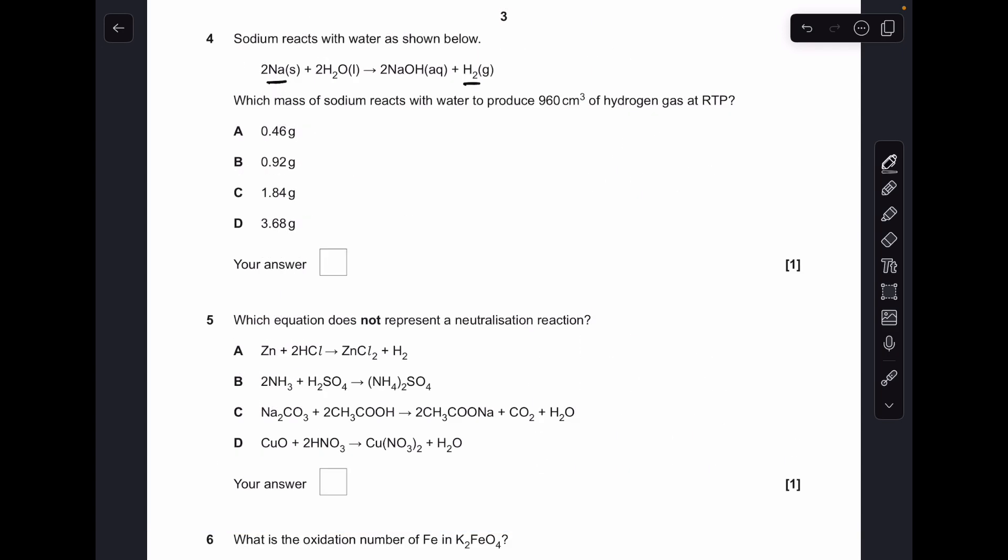Number 4, we've got to calculate the moles of hydrogen produced first of all, so 960 cm³ over 24,000 gets us 0.04 moles. Look at the ratio, so for every mole of hydrogen made, we need 2 moles of sodium, so the moles of sodium needed will be double 0.04, so 0.08, and then we just multiply that by the MR of sodium, which is 23. You get 1.84, which is option C.